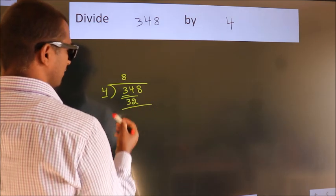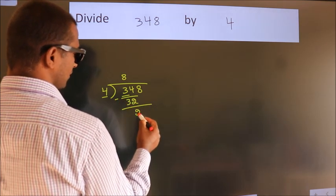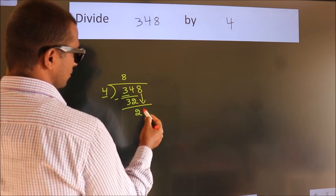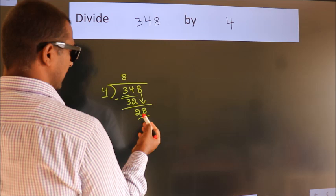Now we should subtract. We get 2. After this, bring down the next number. So, 8 down. So, 28.